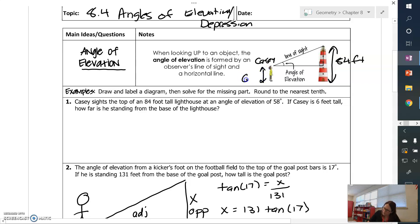And the angle of elevation is 58 degrees. But Casey is 6 feet tall. So right here I have 6 feet. And my angle of elevation is 58 degrees. And I want to know how far Casey is standing from the base of the lighthouse. So my X is going to be right here.